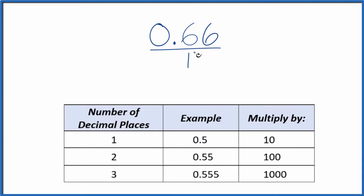We need to get this to a whole number, and to do that we have two decimal places. Two decimal places, we're going to multiply by 100. So 100 times 0.66, that gives us 66, and that's a whole number.